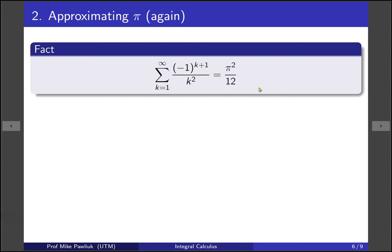So let's start with another strange fact, which is that this related series, so it's this alternating series over k squared, it actually converges to pi squared over 12. So we're going to use this to get an approximation to pi as well.